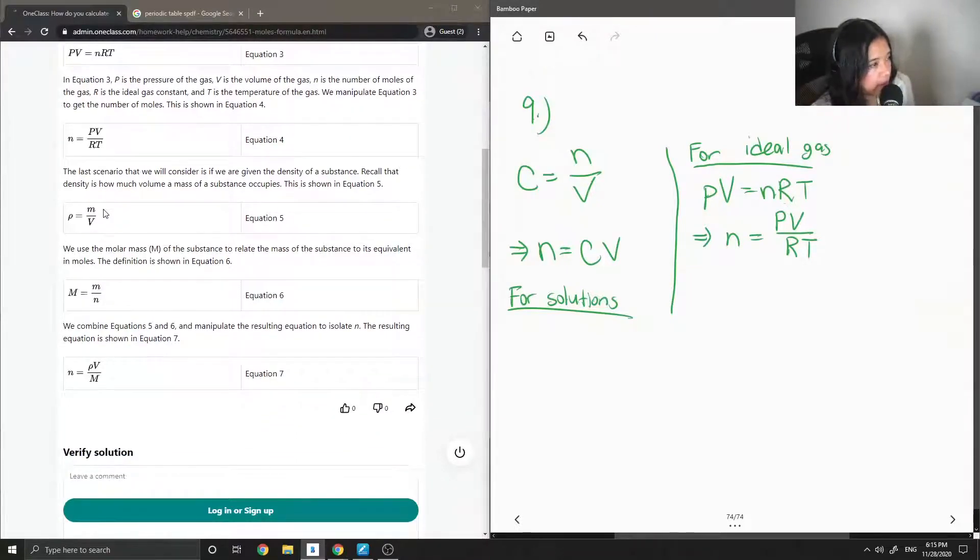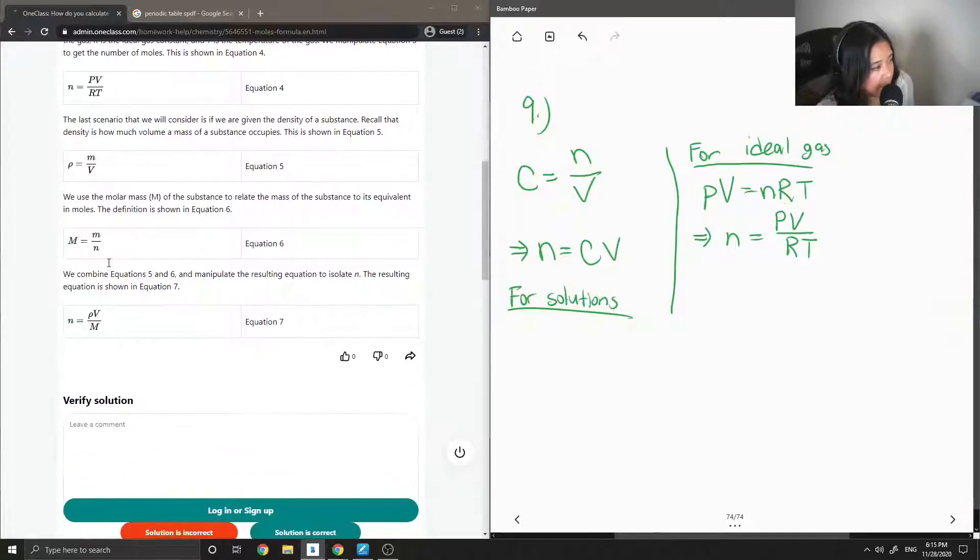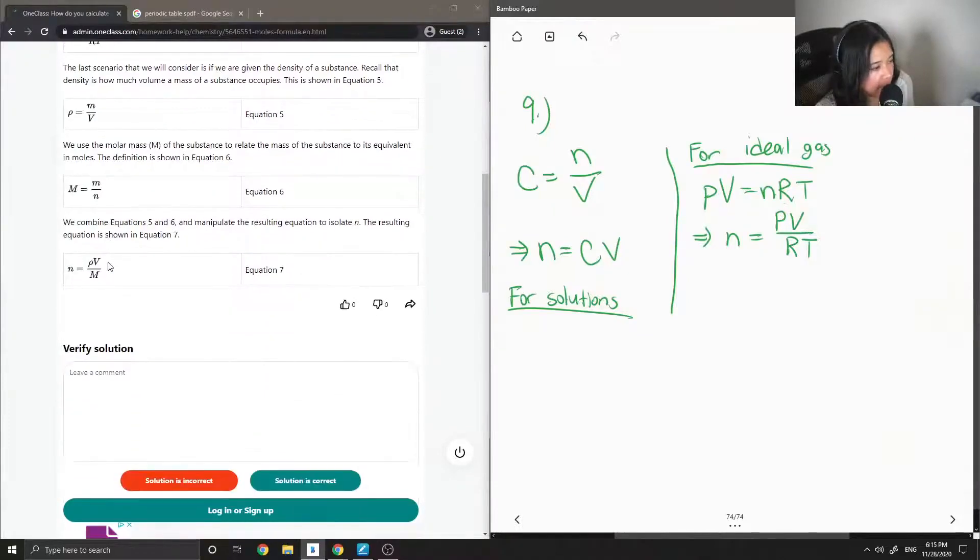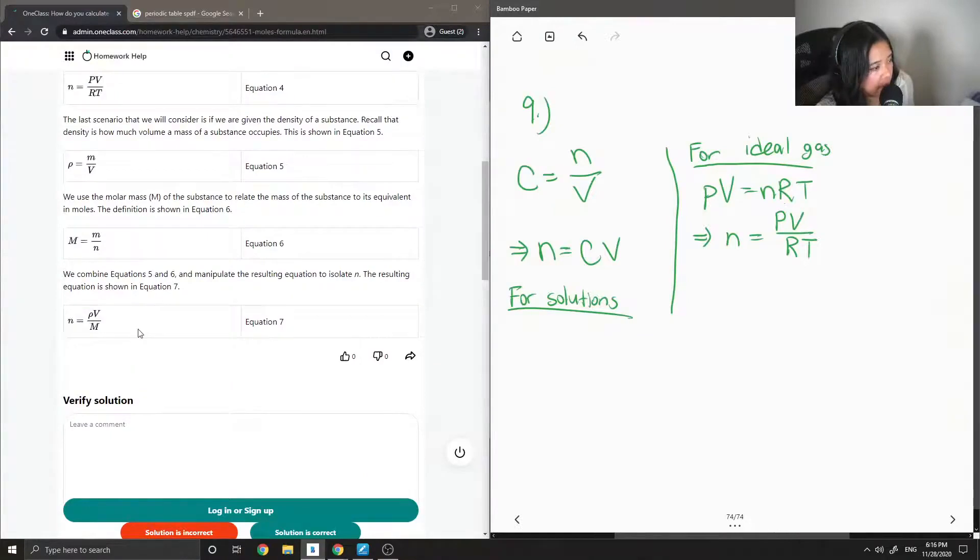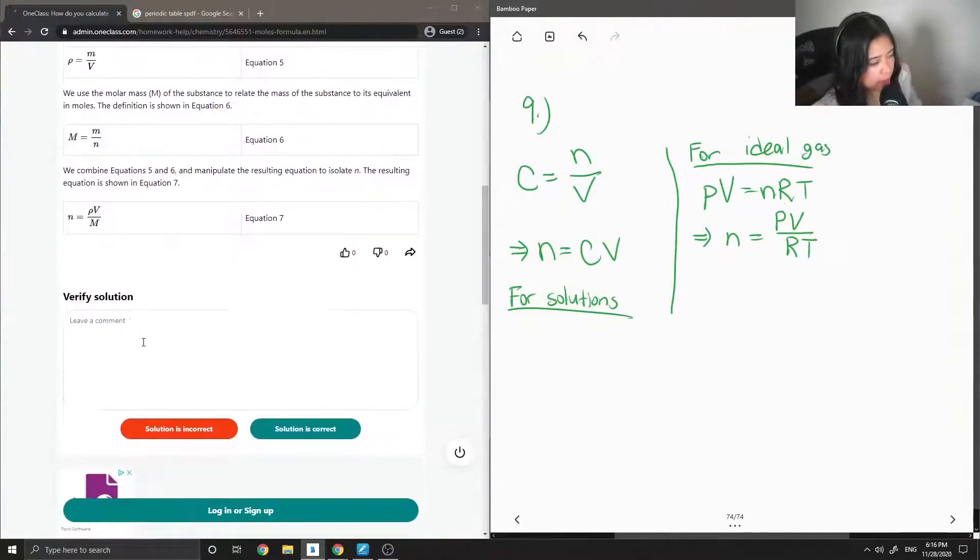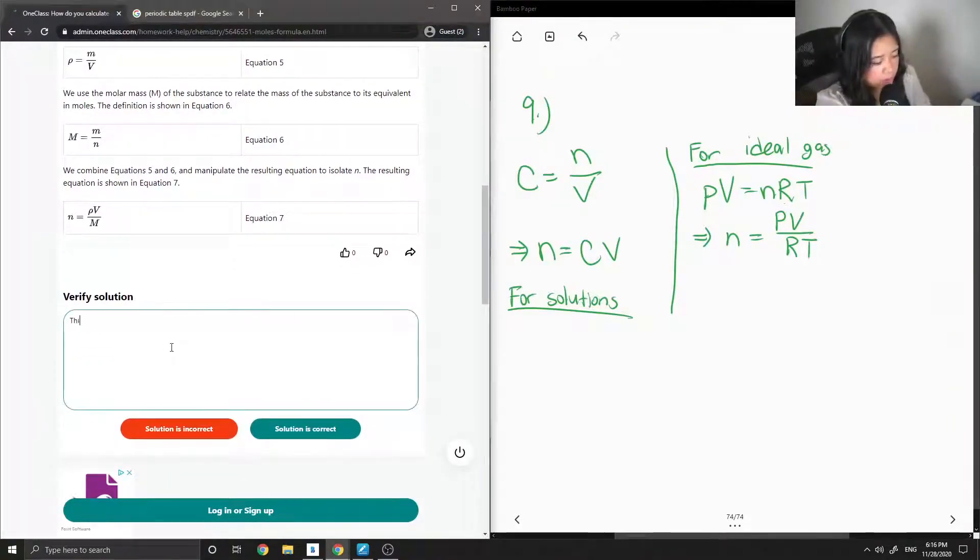The junior tutor also added: if we are given the density of a substance, recall that density is how much mass of a substance occupies a volume. So density is equal to mass over volume. We can use the molar mass of the substance to relate the mass of the substance to its equivalent in moles. So that's another way of doing it as well. You can get number of moles is equal to density times volume divided by the molar mass. So this solution is correct.